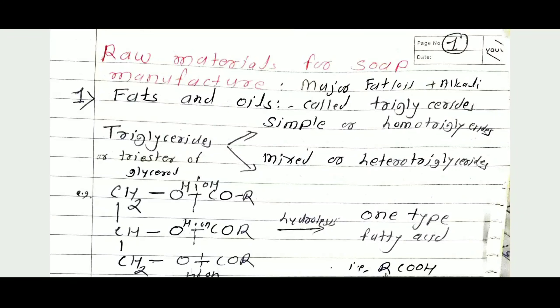In the last period lecture we discussed the introduction of soap and detergent, then the definition of soap. Soap is nothing but alkali metal salt of higher fatty acids. There are two methods for preparation of soap: one is the saponification method and another is the neutralization method.